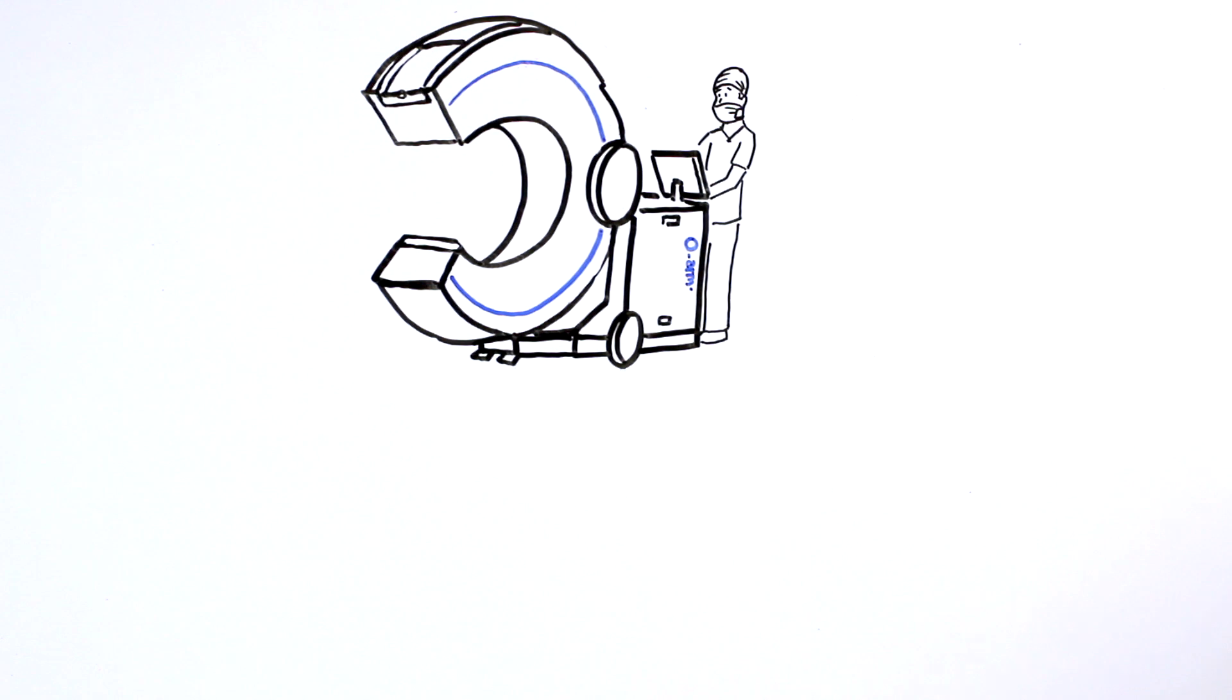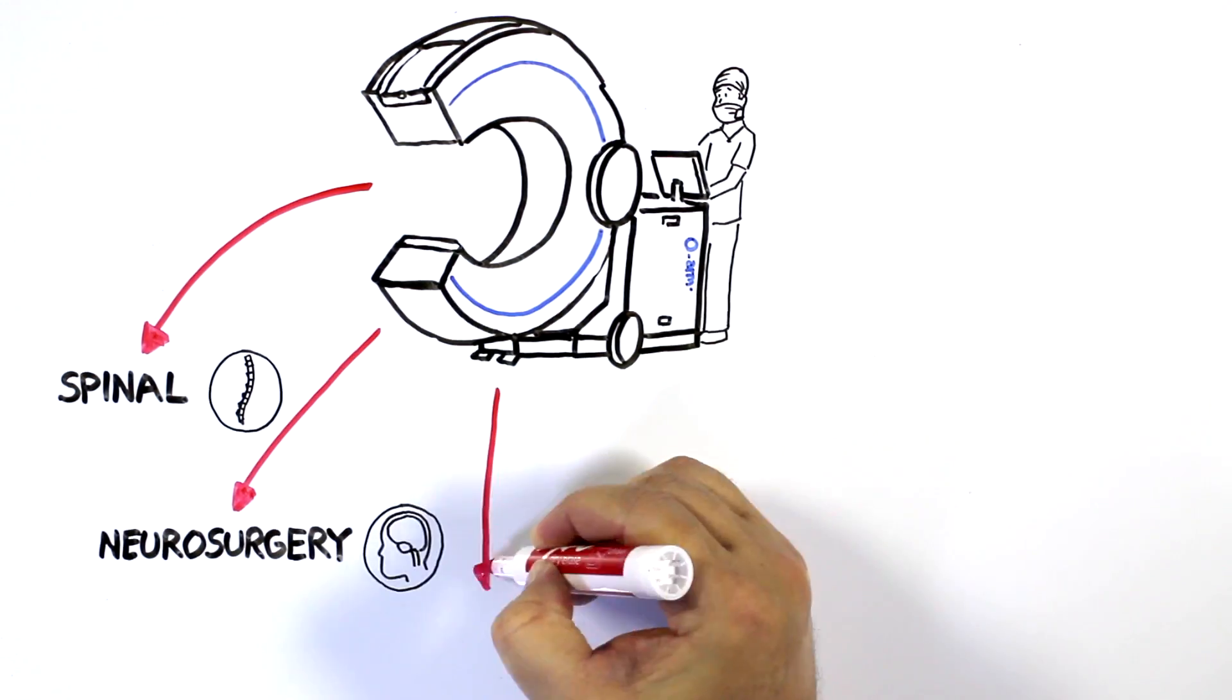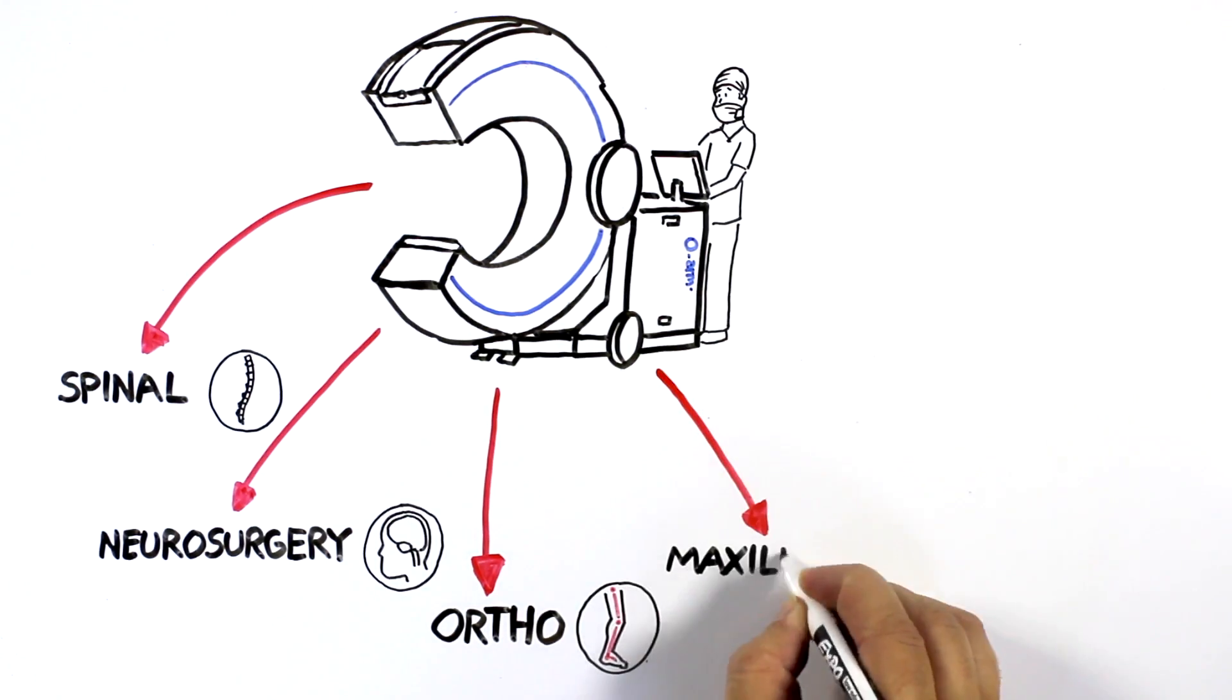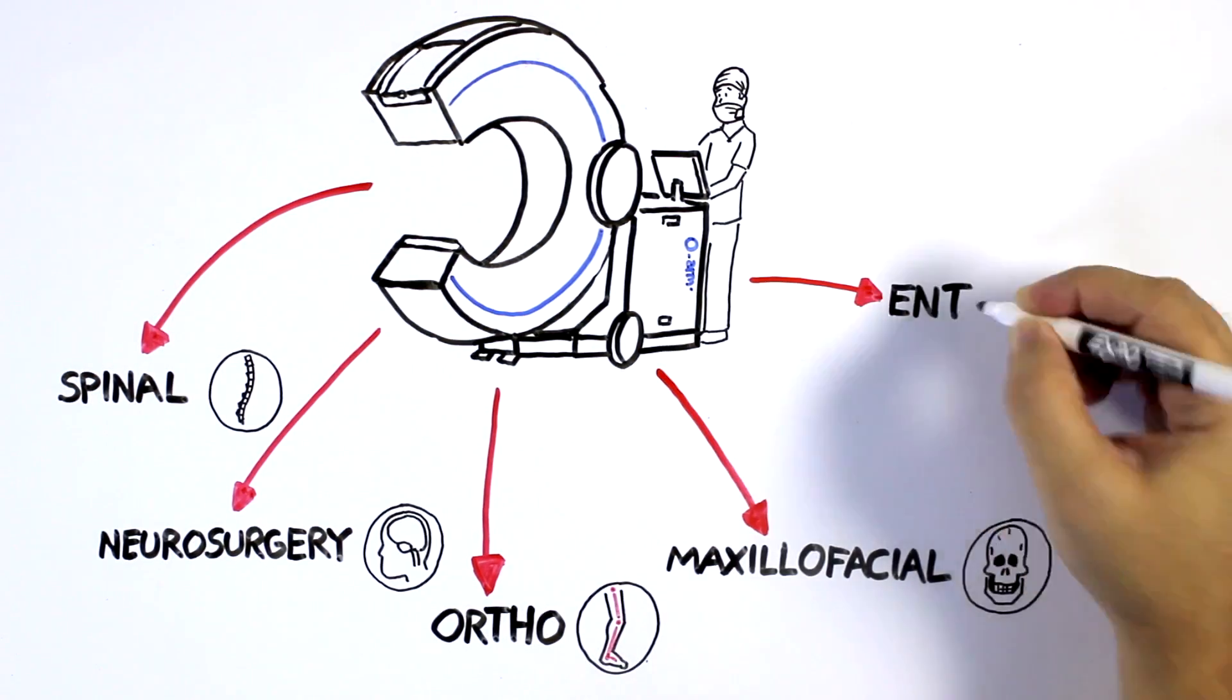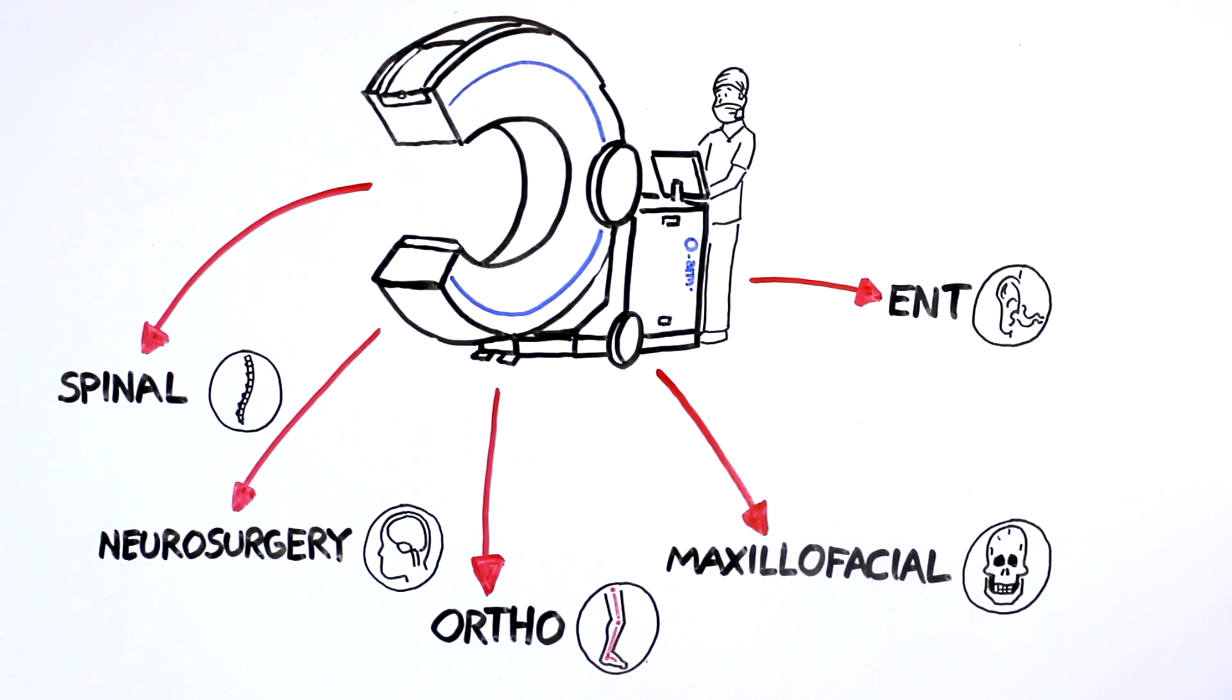The O-ARM is mainly used in five departments – spinal, neurosurgery, orthopedics, maxillofacial, and ENT – with more specialties looking to adopt.